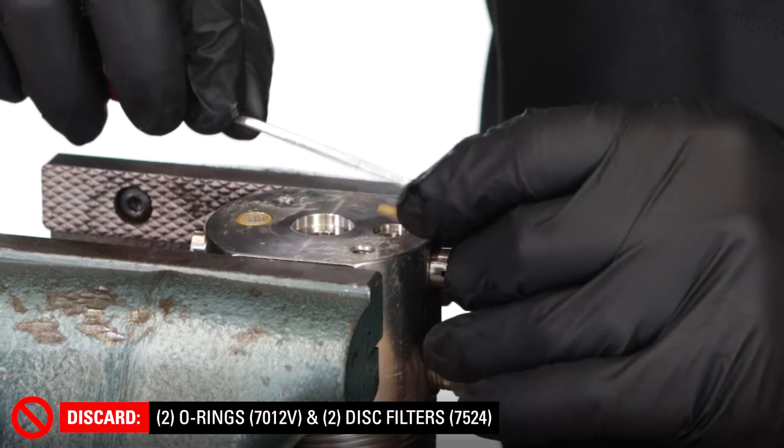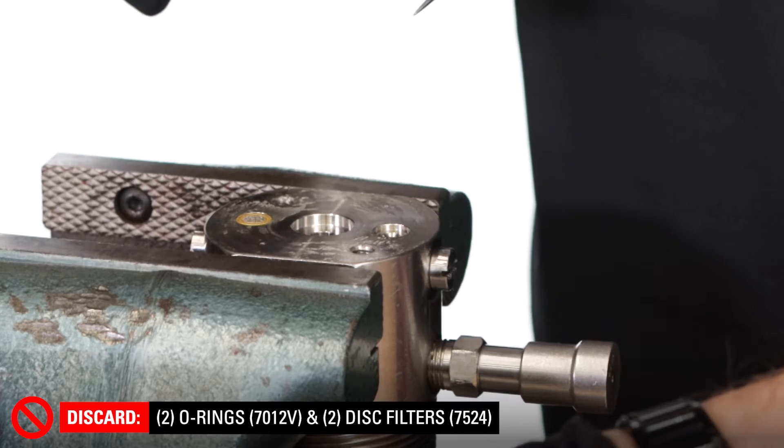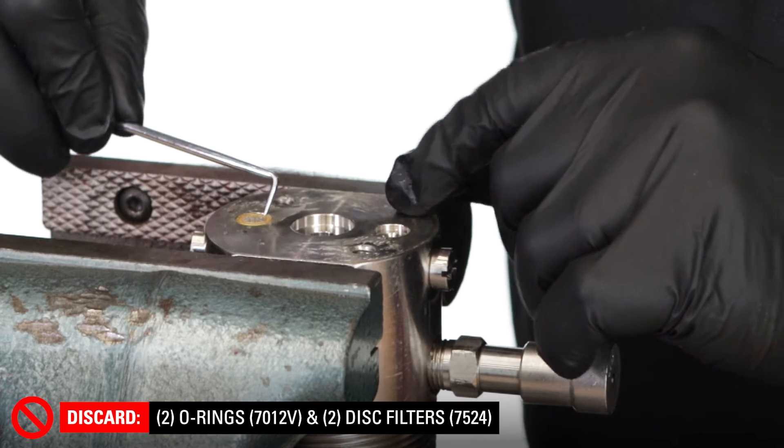On the housing, remove the two O-rings and the two disc filters. They should come out together.